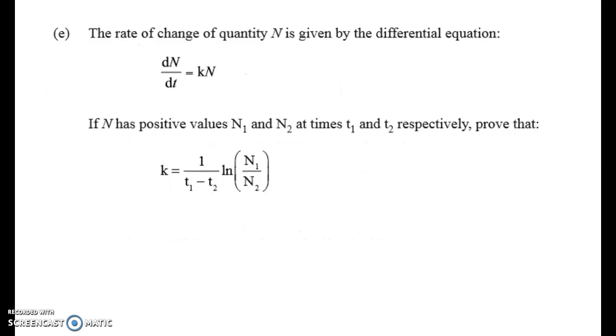And it's a differential equation, a very general one. We're given the rate of change of quantity n, and it's given by this differential equation, which we've worked with lots. And n, we're told, has got positive values n1 and n2 at these two times. And we have to prove the value of k is equal to this thing here.